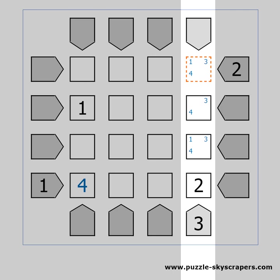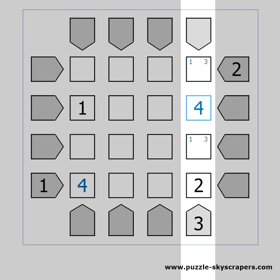The first row has 2 visible skyscrapers from the right. If there was a 4 in this cell it would block the view to all other skyscrapers. We can eliminate the 4 as a possible candidate for this cell. Similarly we cannot have a 4 on the third row, as only 2 skyscrapers will be visible from the bottom. The 4 can only be on the second row. Now if the 1 is on the third row, only 2 skyscrapers will be visible from the bottom. We should have the 3 in the third row. And we complete the column with the missing 1.